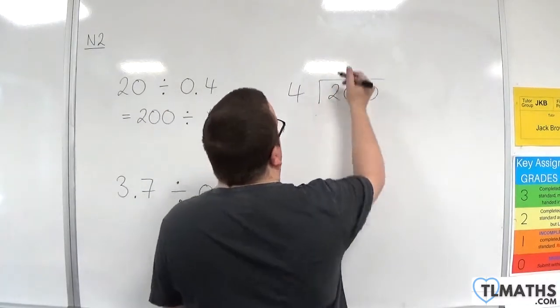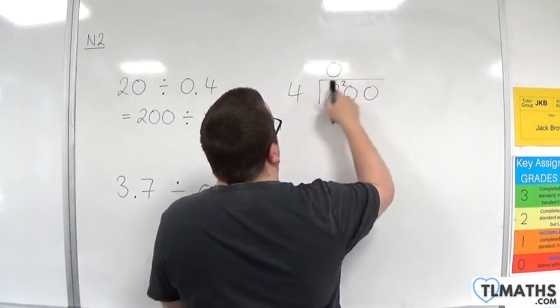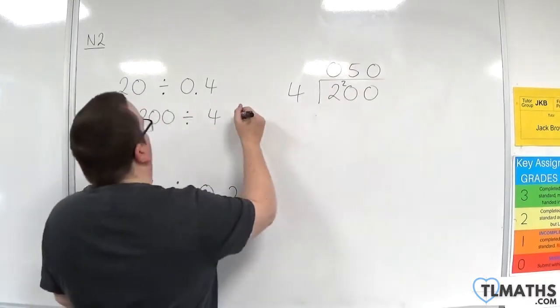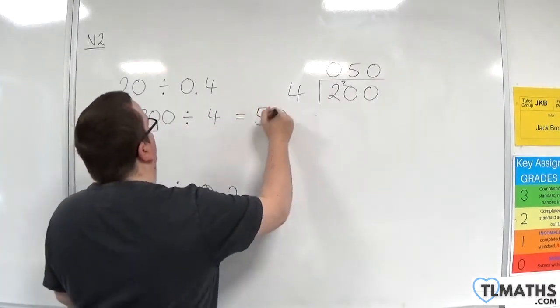But 4s into 2 go 0 with 2 remainder. 4s into 20 go 5 with no remainder. 4s into 0 go 0. So, the answer is 50.